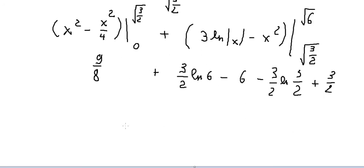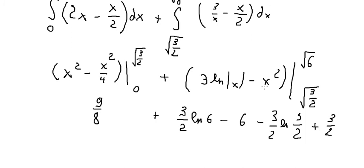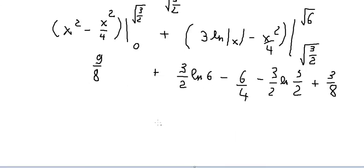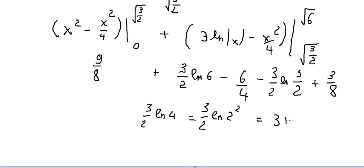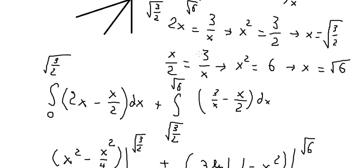Now we sum all the numbers together and we get 3 over 2 times ln of 4, which equals 3 over 2 times ln of 2 squared, and that gives us 3 ln of 2. That is the final answer. Thank you for watching — here is the full answer to the question.